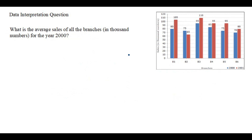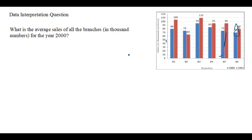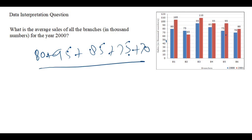The next question asks for the average sale of all branches in 2000 in thousands. So add all the branch values for year 2000: 80 plus 95 plus 95 plus 85 plus 75 plus 70, then divide by the total number of branches, which is 6. You can complete that calculation on your own.